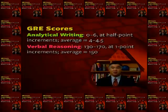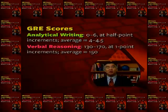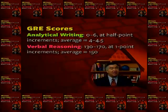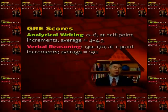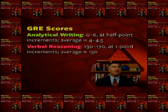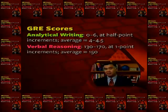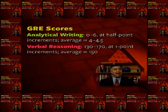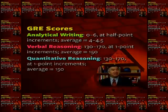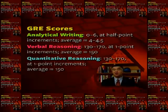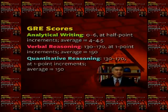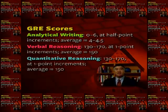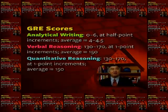On the verbal reasoning portion of the exam, you'll receive a score ranging between 130 and 170, with the scores varying at one-point increments. So typical scores might be 150, 151, 152, and so on. An average score is likely to be somewhere around 150. And on quantitative reasoning, the same score scale is used — a score ranging between 130 and 170, varying at one-point increments — and again, an average score is likely to be somewhere around 150.